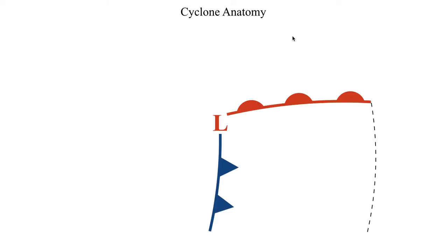Hello class, welcome to the next segment in lecture 18. In this segment we're going to take a look at some of the horizontal anatomy features of a typical mid-latitude extratropical cyclone, and also take a look at some of the details behind the anatomy as well. The main thing I'm going to focus on is the mature stage of the cyclone, where it's typically at its peak intensity.